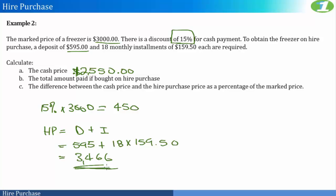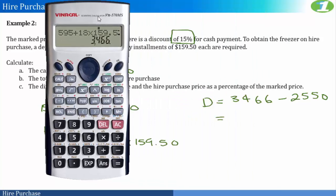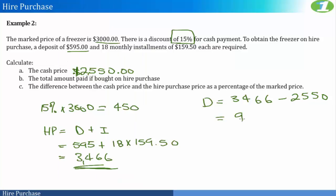And notice here again that this price is actually much more than your cash price. Now the difference between the cash price and the hire purchase price as a percentage of the marked price. Well, all this is asking us is to find the difference. Let's call that D. And this would be $3,466 minus $2,550, and this gives us $916.